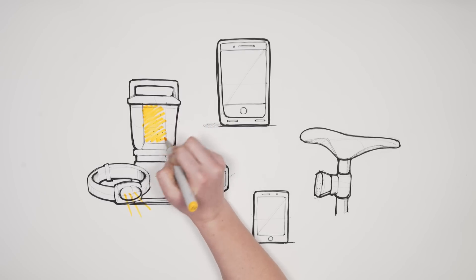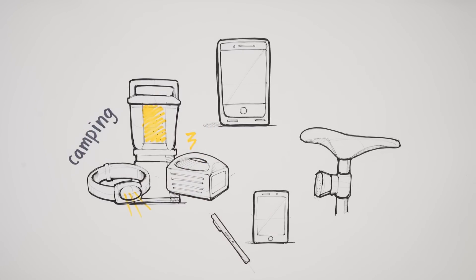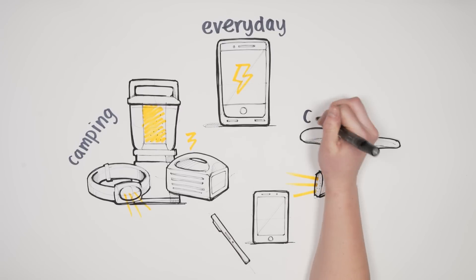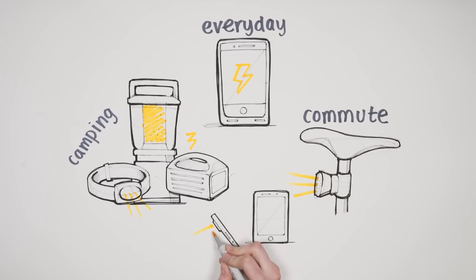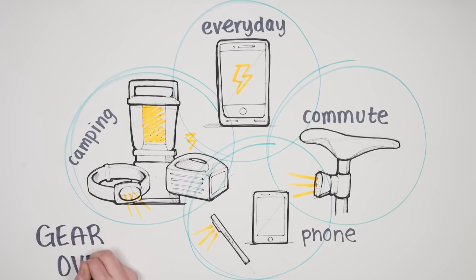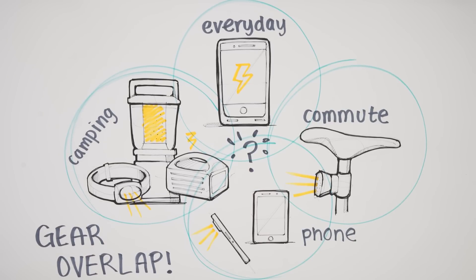When we go camping, we take headlamps, lanterns, and power banks. During the week, we use portable chargers to top up our phones and separate bike lights for our commute. When all else fails, we even break out our flashlight on our cell phones. This is a huge gear overlap. Why own four separate products when a single device could do it all?